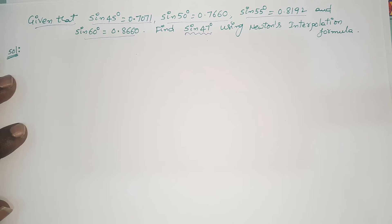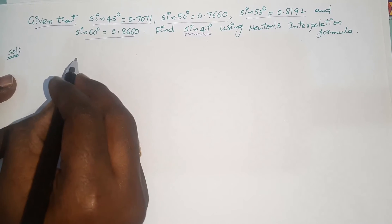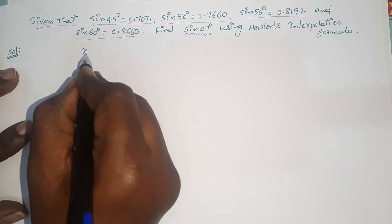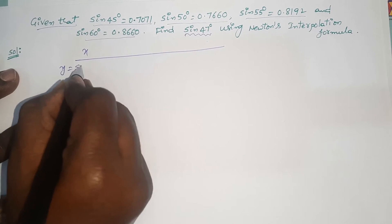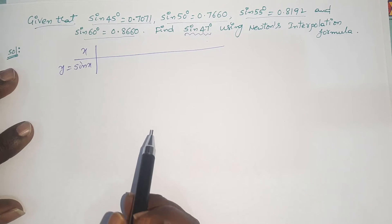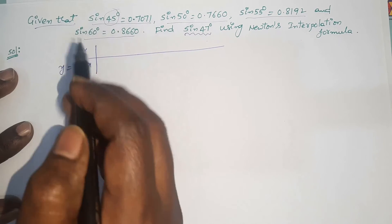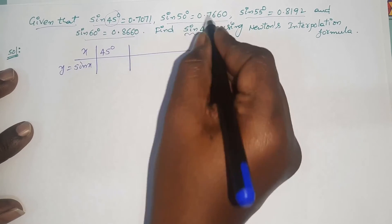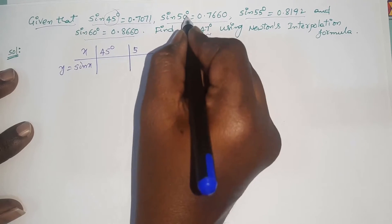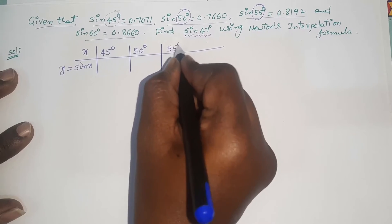You have to decide whether we are going to apply Newton's forward or backward interpolation formula according to the data. Here the data is provided indirectly, so we should write the data again in table form. I will write x values and take y as sin x, since the given function is sin.